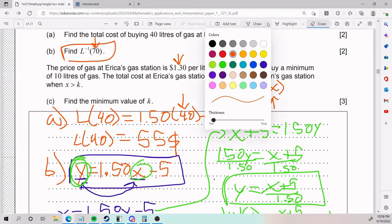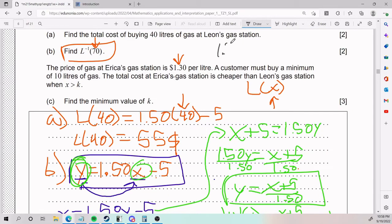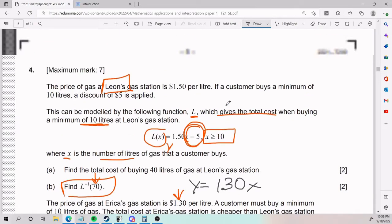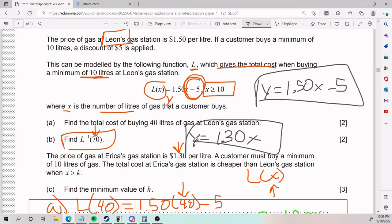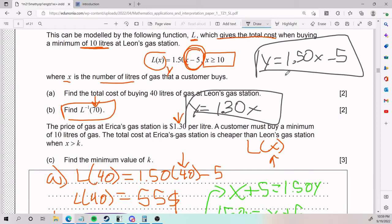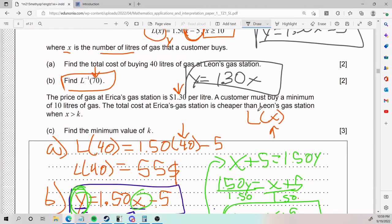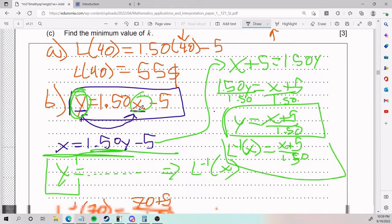The way that you set it up is like this: Erica's gas station charges $1.30 per liter, but it has no discount. So you kind of have like Y equals 1.30X. What did we have for Leon's? For Leon's we had that Y was 1.50X minus 5. Now it looks like something we can work with. I need to kind of like equal them to each other or make some sort of an inequality to see what goes on. So the minimum value of K is wherever... given the concept of the problem, the minimum value of K will be set up like this.